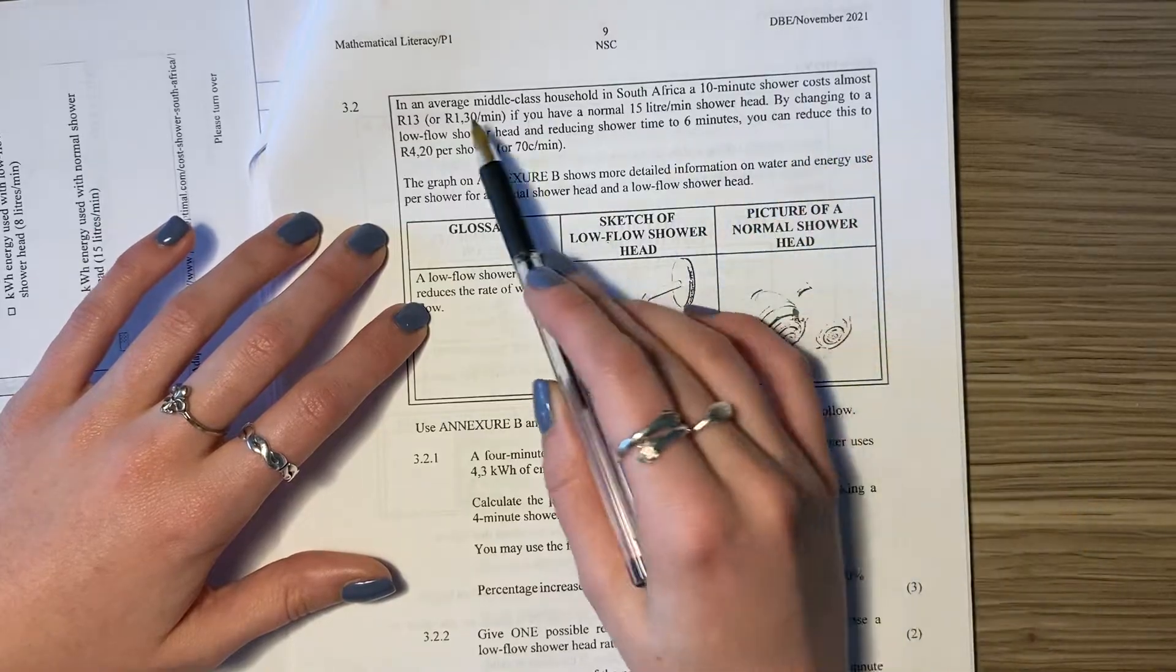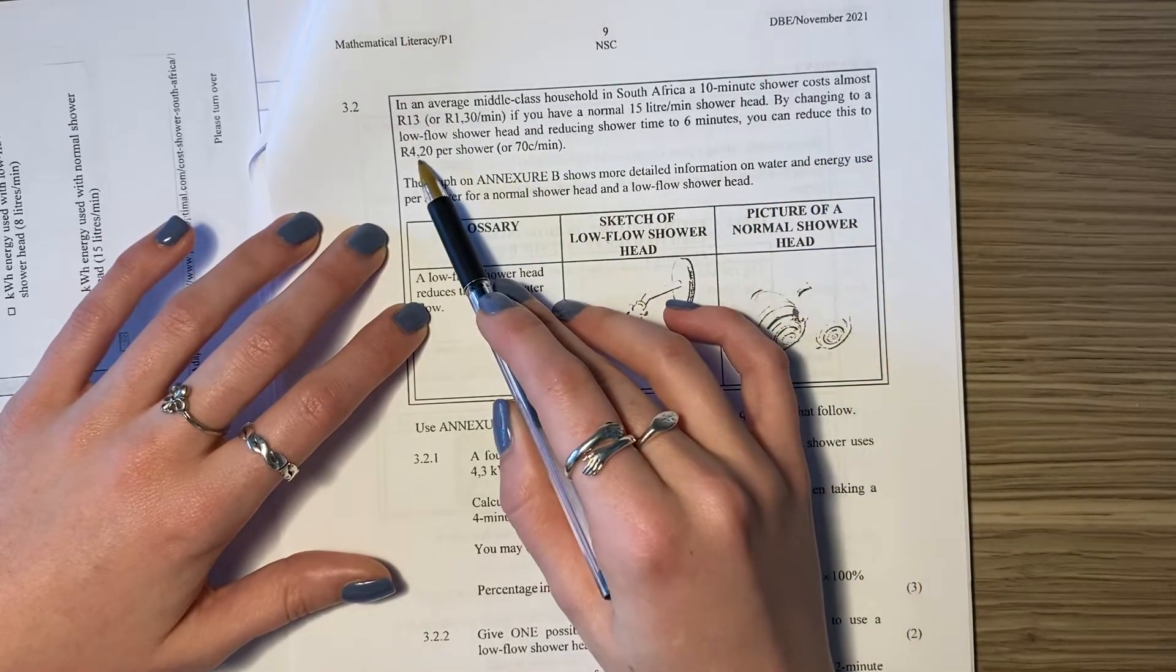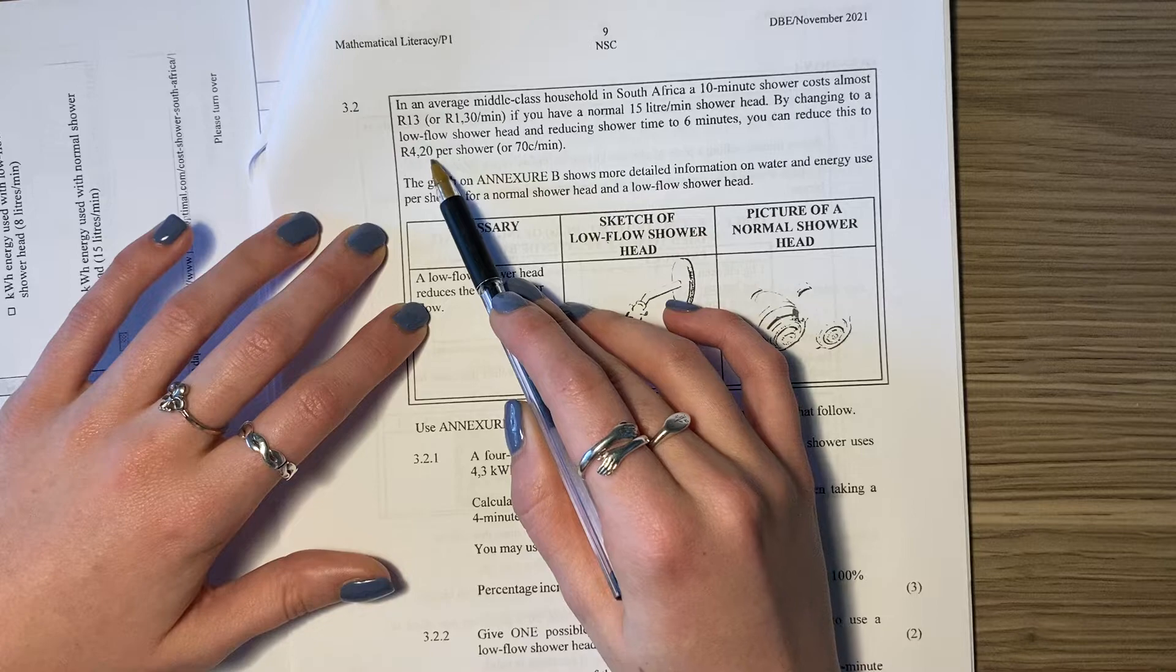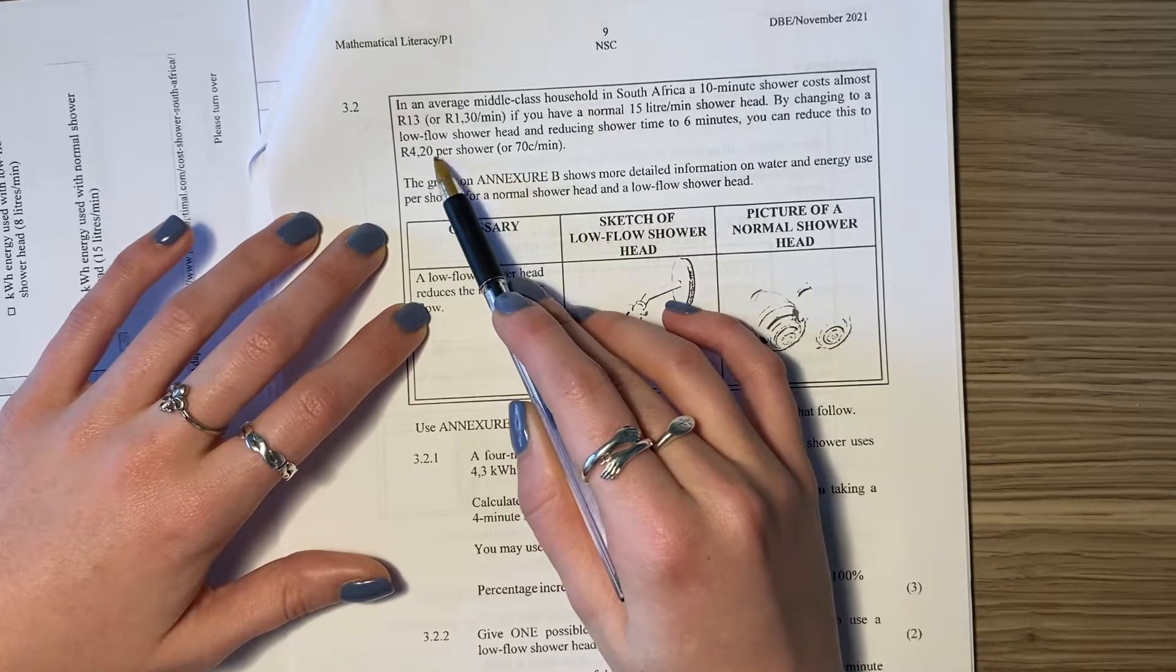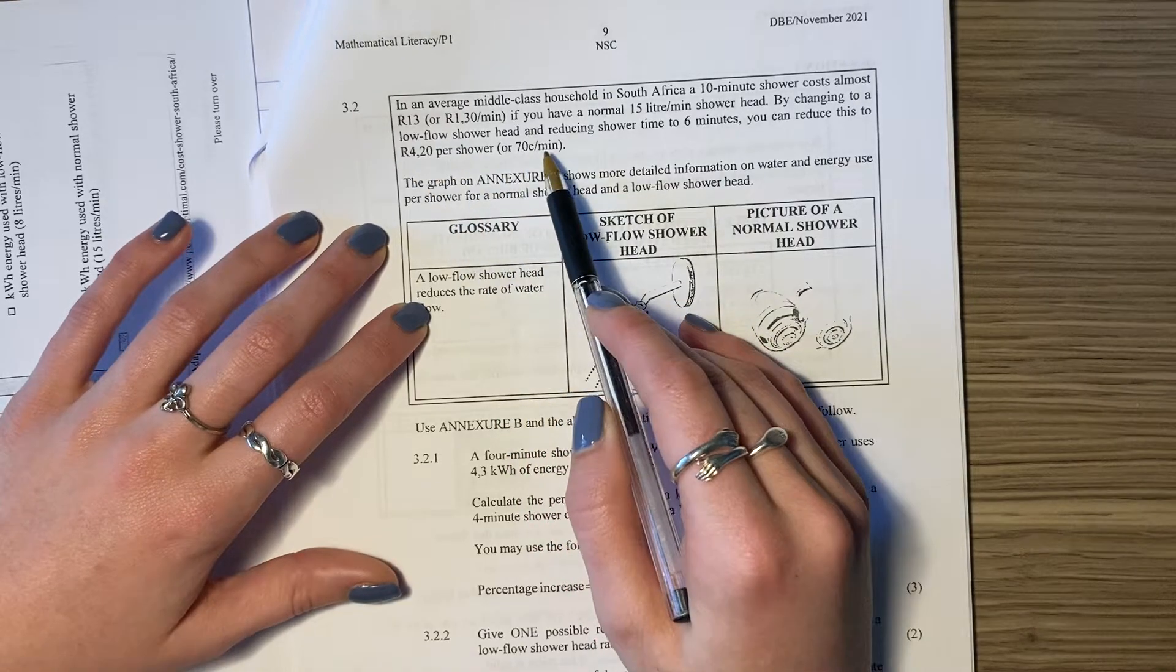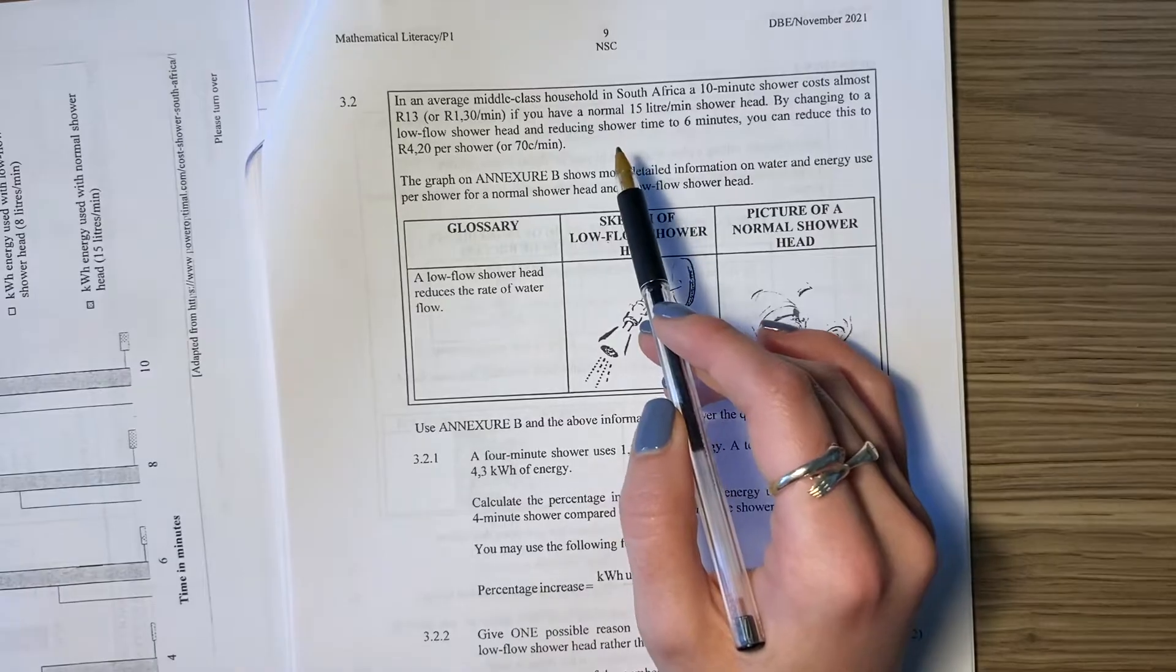...you can reduce this cost of 13 rand to 4.2, 4 rand and 20 cents per shower, or 70 cents per minute. So you can reduce it quite substantially.